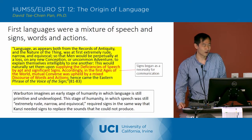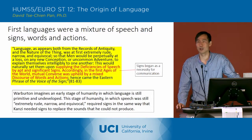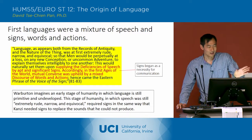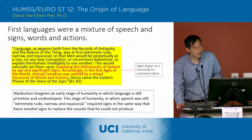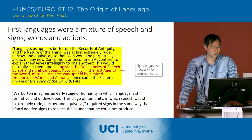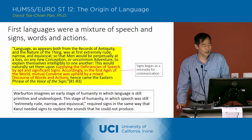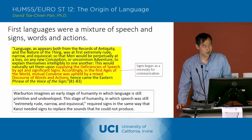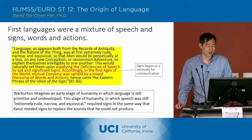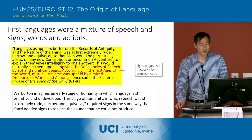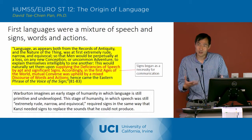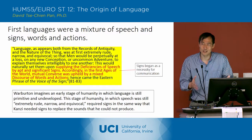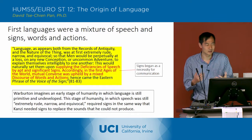That's the very first sentence of the passage you're supposed to read, and at the end of 'equivocal' there was that long footnote. Continuing on: men would be perpetually at a loss on any new conception or uncommon adventure to explain themselves intelligibly to one another. This would naturally set them upon supplying the deficiencies of speech by apt and significant signs. In the first ages of the world, mutual converse was upheld by a mixed discourse of words and actions. Hence came the Eastern phrase of 'the voice of the sign.' So he's saying that signs — not language but sort of images — were necessary for communication because early language was very crude and equivocal.